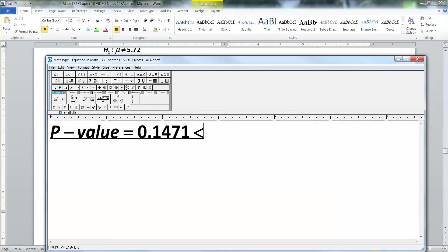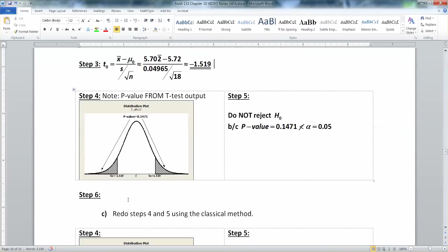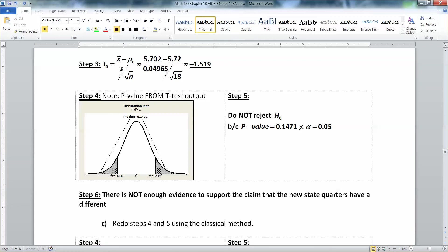All right. So we do not reject h0. And the p-value is not less. So put a slash through it. It's not less than your alpha and you want it to be, which was 0.05 in this instance. I think it was. Yep. It was 0.05. All right. So that means that there is not enough evidence. There is not enough evidence to support the claim that the new state quarters have a different weight than the old quarters. Done with that.